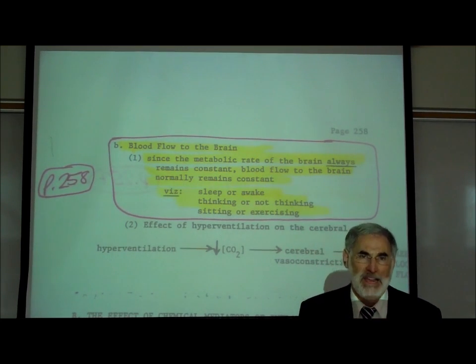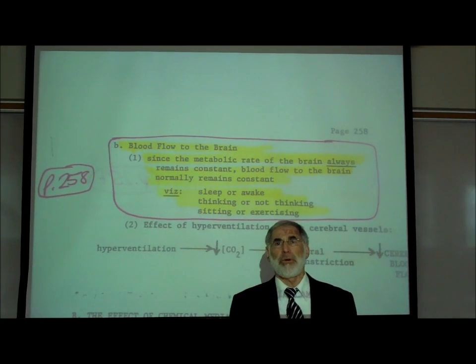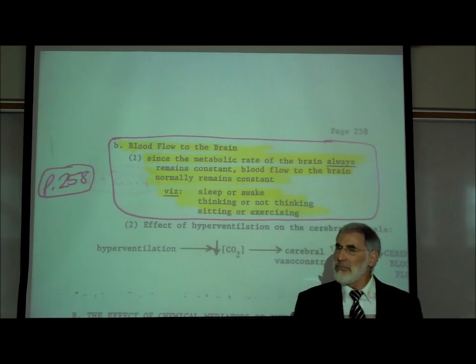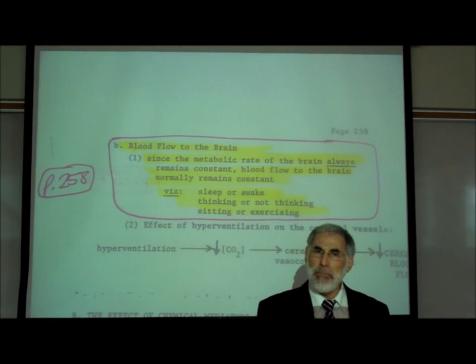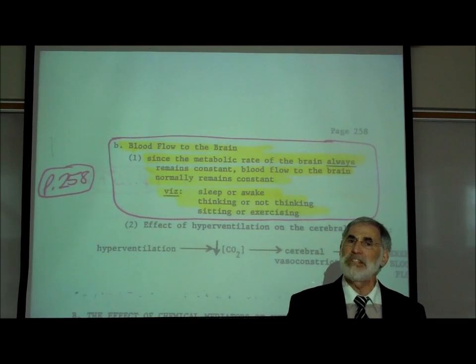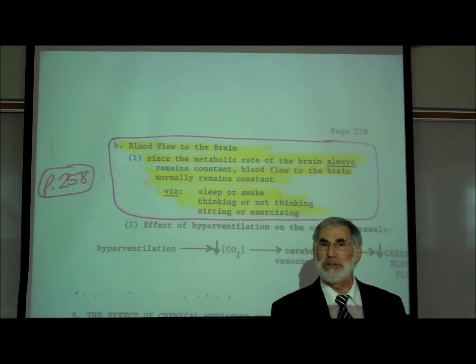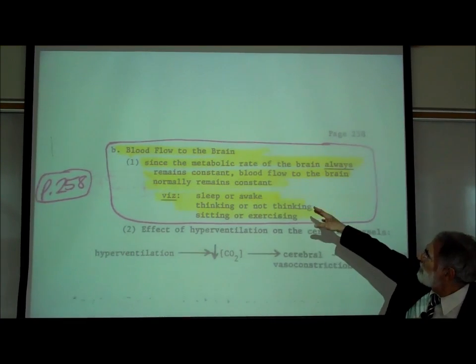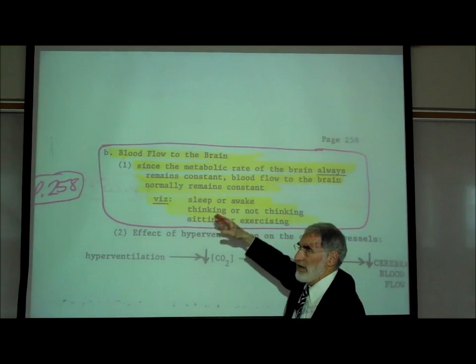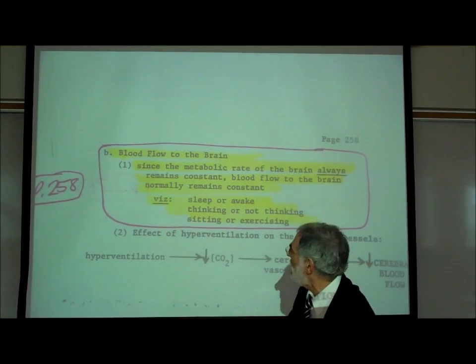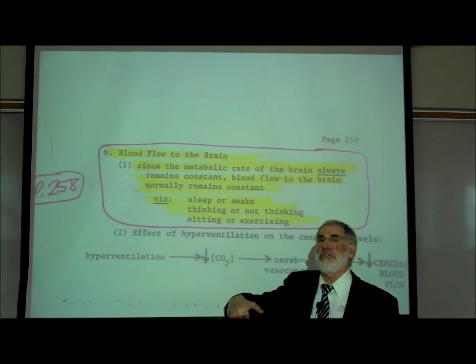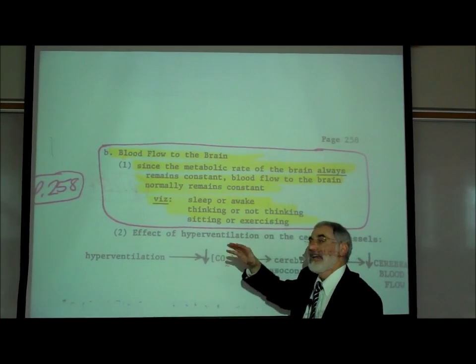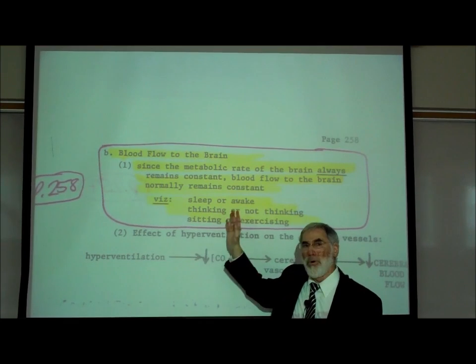We might ask, what about blood flow to the brain? Does metabolic rate of your brain increase or decrease? And somewhat surprisingly, the metabolic rate of your brain remains more or less constant, irrespective of what you use your brain for. So we wrote that since the metabolic rate of the brain remains more or less constant, therefore, blood flow to the brain should similarly remain more or less constant. It doesn't matter whether you're asleep or awake.